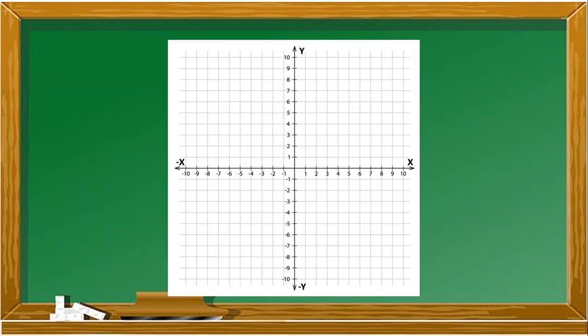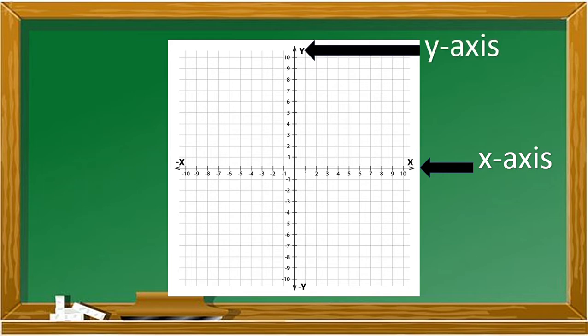The two number lines are called the x-axis, which is the horizontal line, while the vertical line is called the y-axis. The plane that contains the x and y-axis is called the coordinate plane. The point zero at which the number lines intersect is called the origin.